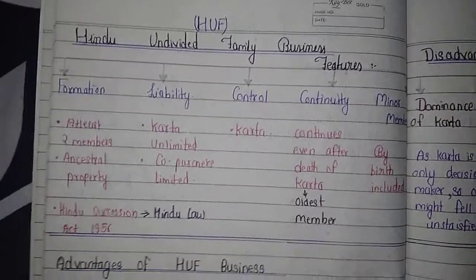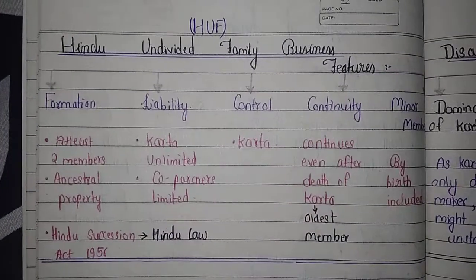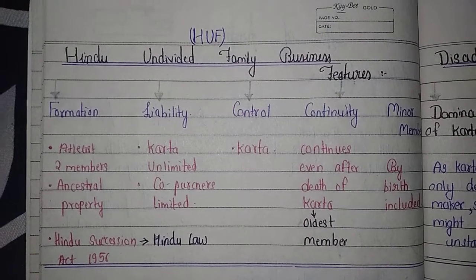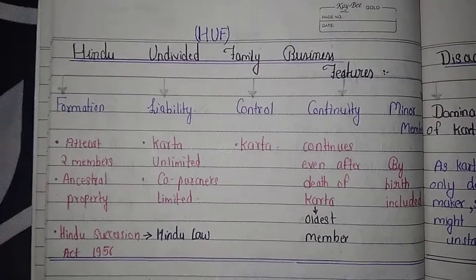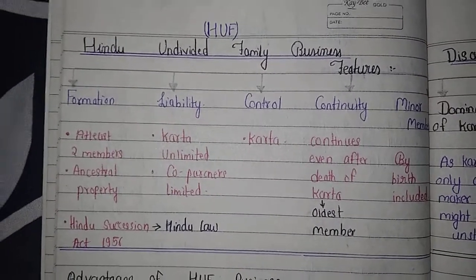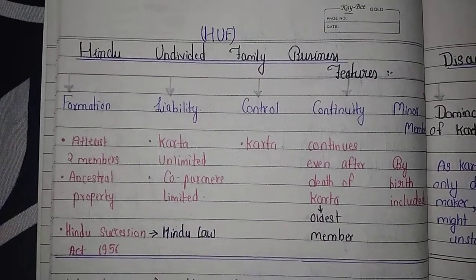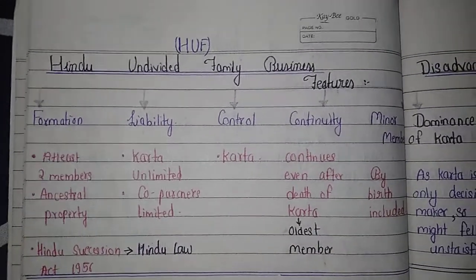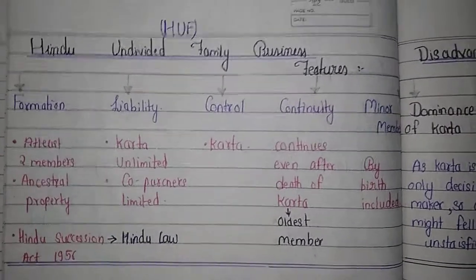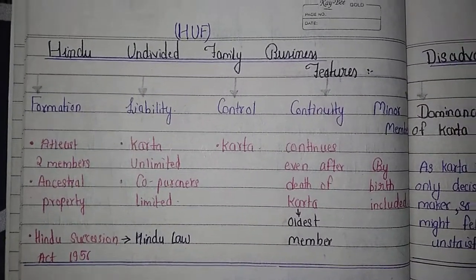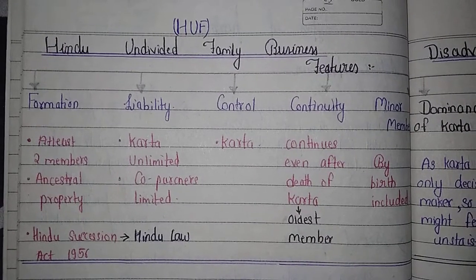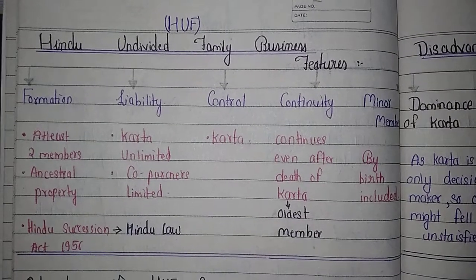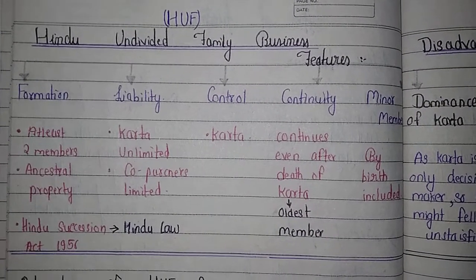Regarding liability, the liability of the Karta is unlimited, whereas the liability of co-partners is limited. The Karta is the head of the family who runs the business, and co-partners are all the other members of the family. Since the Karta is the head of the family, control of the business is in the hands of the Karta.